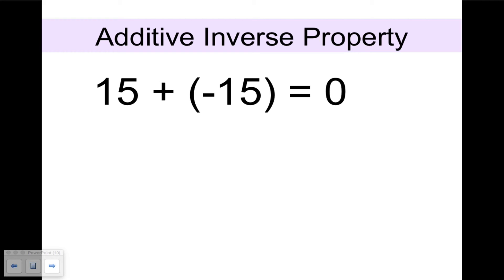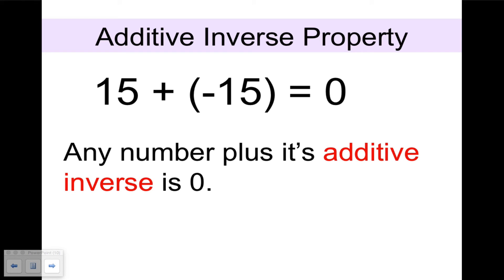The additive inverse property tells us that 15 plus negative 15 equals 0. Any number plus its additive inverse is 0. Additive inverse is a synonym for opposite. Any number plus its opposite equals 0.